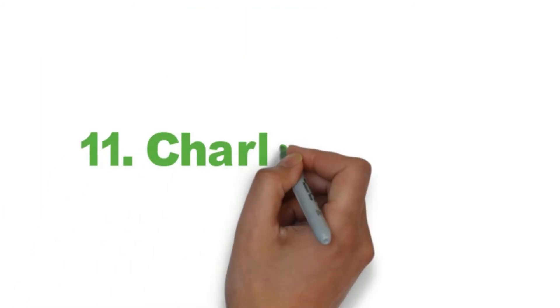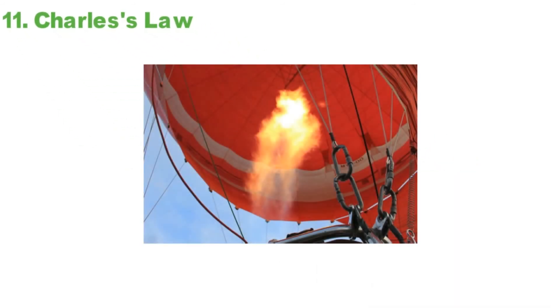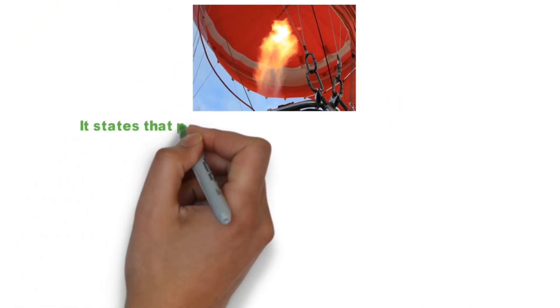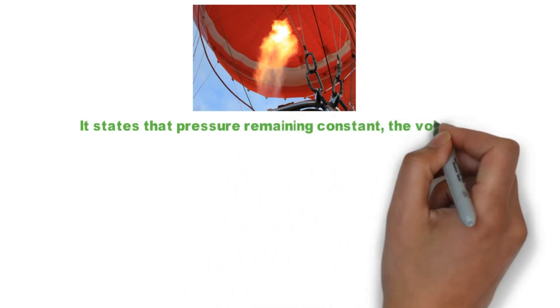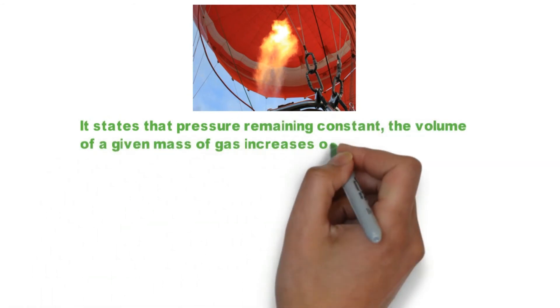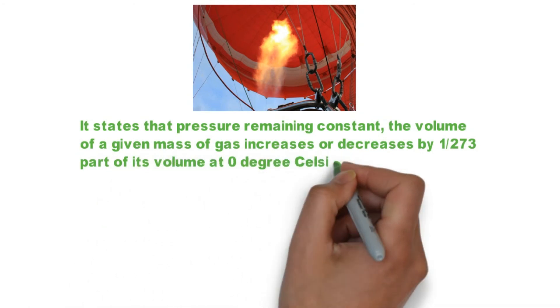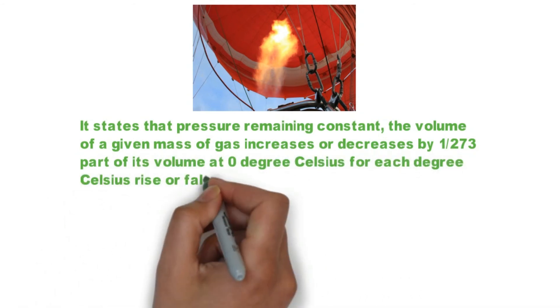Charles's Law. It states that pressure remaining constant, the volume of a given mass of gas increases or decreases by 1/273 part of its volume at 0 degrees Celsius for each degree Celsius rise or fall of its temperature.